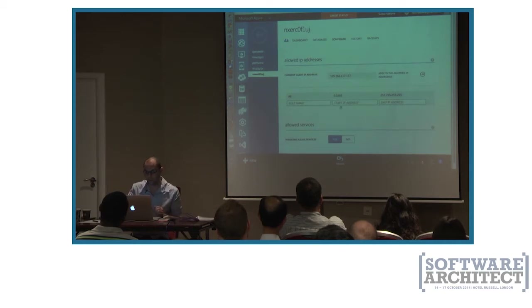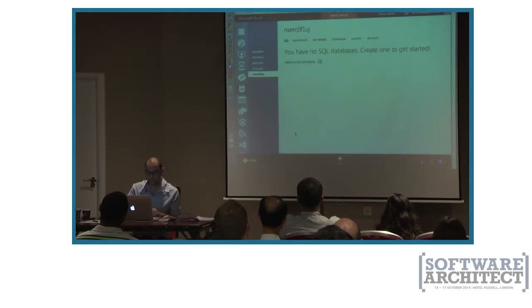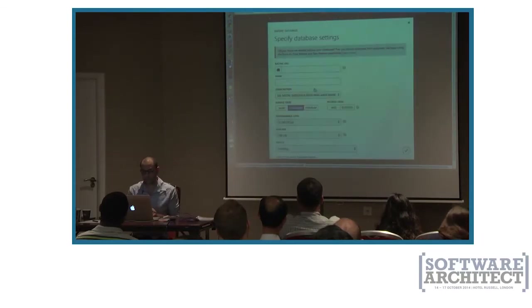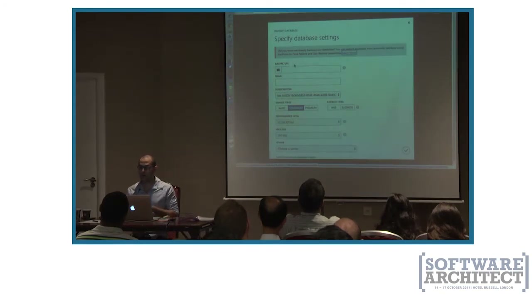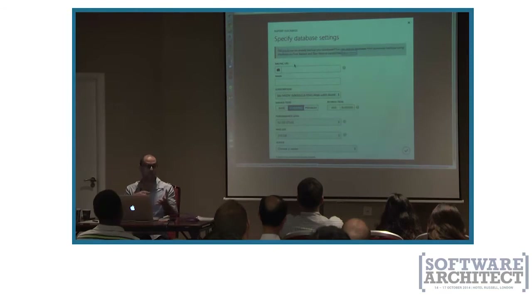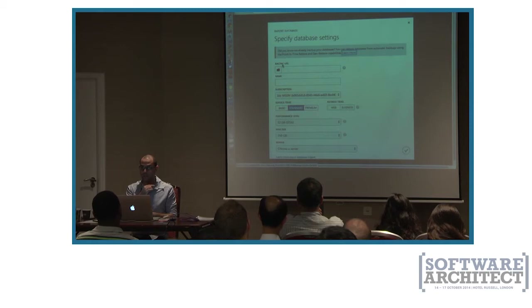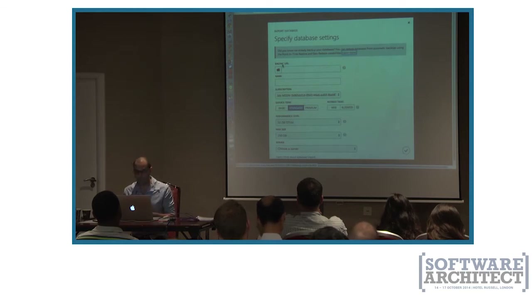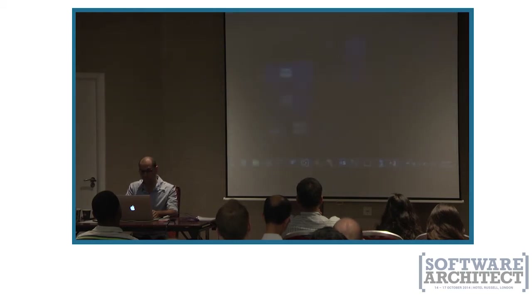To import a database, the easiest way is to click New, Import. You can choose a BACPAC file, but it requires a BACPAC URL — not a local file to be uploaded. Instead, you need to upload it first to Blob Storage, which is where we keep files in Azure, and then point to that location. When I exported the data earlier, I had the option to export directly to Blob Storage, but I want to show you a cool application called CloudBerry Explorer that lets me copy files to Blob Storage.